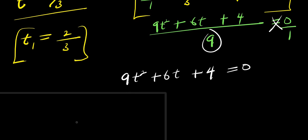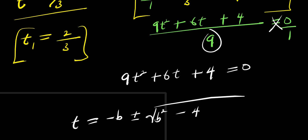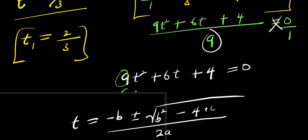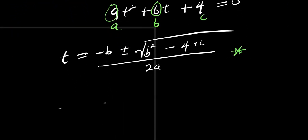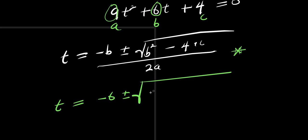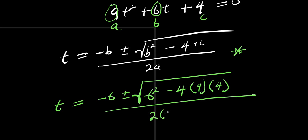I'm going to solve using the quadratic formula: t equals negative b plus or minus square root of b squared minus 4ac, divided by 2a. The coefficient of t squared is 9, so a equals 9. The coefficient of t is 6, so b equals 6. And c equals 4. I'm going to insert these into the formula: t equals negative 6 plus or minus square root of 6 squared minus 4 times 9 times 4, divided by 2 times 9.